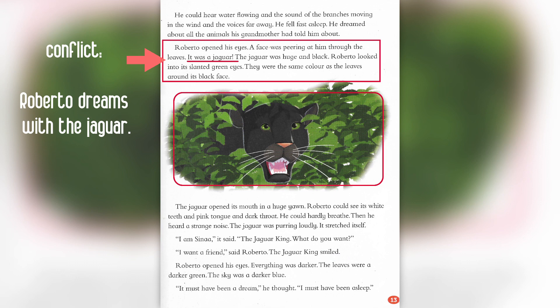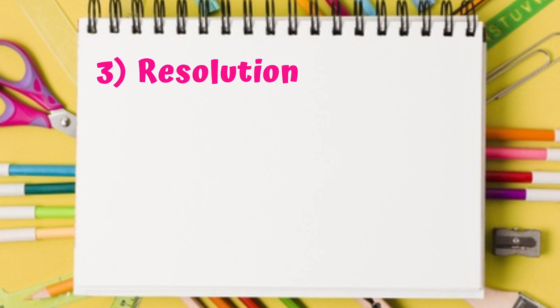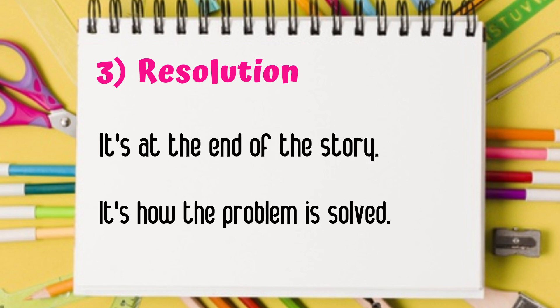There is a highlighted sentence that says, 'It was a jaguar,' and you can also take a look at the picture of this animal. Finally, we will analyze the resolution. The resolution is at the end of the story, and it's how the problem is solved at the end.